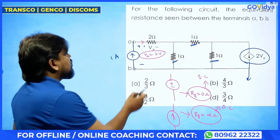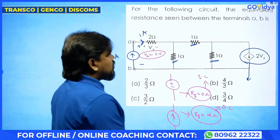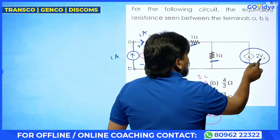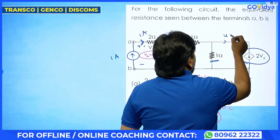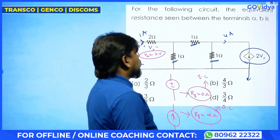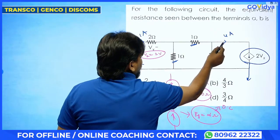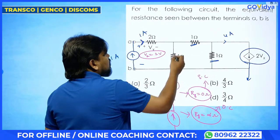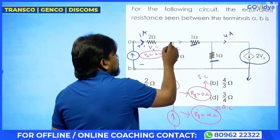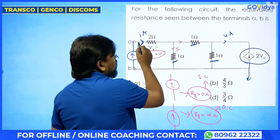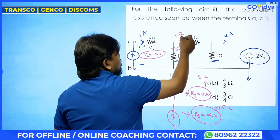Here current is nothing but 1 ampere and here you know the current. So what is the current in this? 2 times of Vx. Vx value is 2 volt. 2 times of Vx is nothing but 4 amperes. So now in these 2 branches, we are having some currents. I am assuming a current of I in this branch. So remaining current — I current is coming and 1 ampere is coming and I current is leaving. So remaining current is 1 minus I.